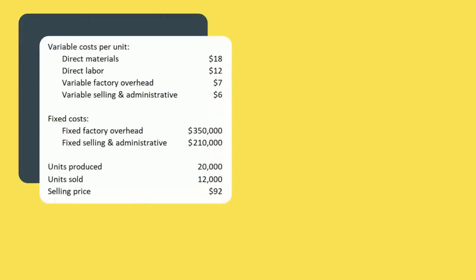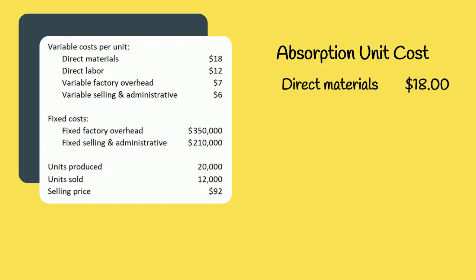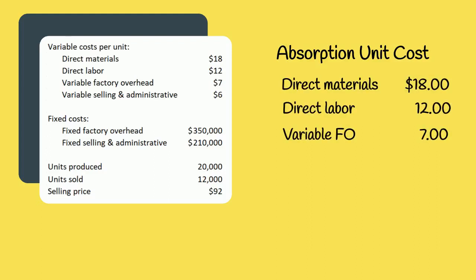Let's look at an example. Assume the following information for your company. How much would one unit cost if we used absorption costing? We would include eighteen dollars of direct materials, twelve dollars of direct labor, and seven dollars of variable factory overhead. We would also include fixed factory overhead; however, we won't include all of it since we have not sold all the units we made.